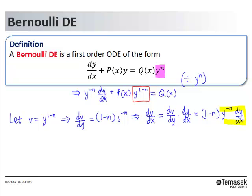Now we notice that y to the power negative n dy/dx is exactly the first term in our modified DE.